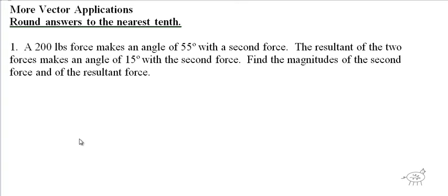Greetings math fans. This is another note sheet — a little more review on the vector applications. A 200-pound force makes an angle of 55 degrees with the second force. The resultant of the two forces makes an angle of 15 degrees with the second force. Find the magnitudes of the second force and of the resultant force.